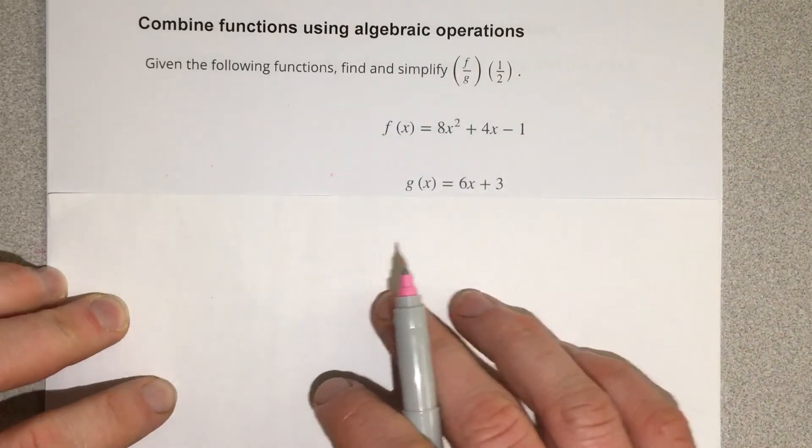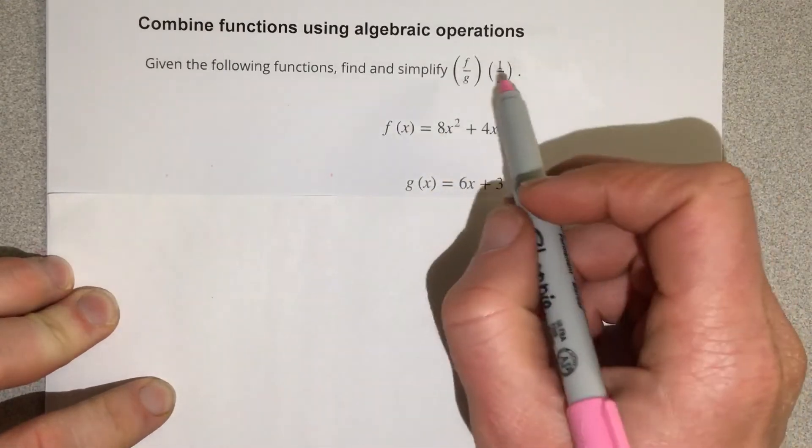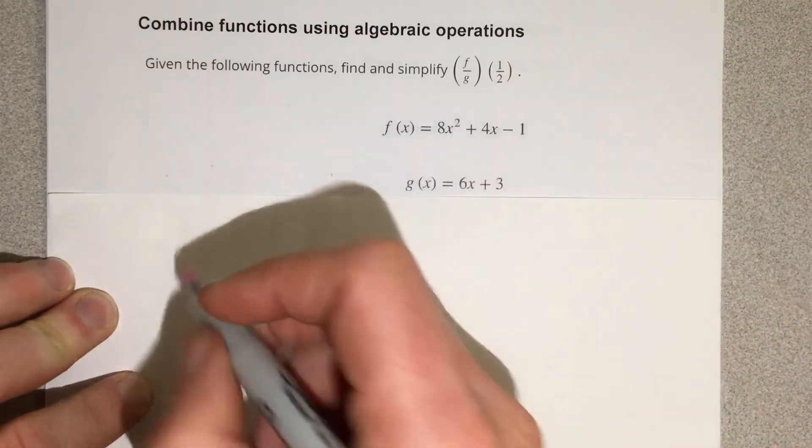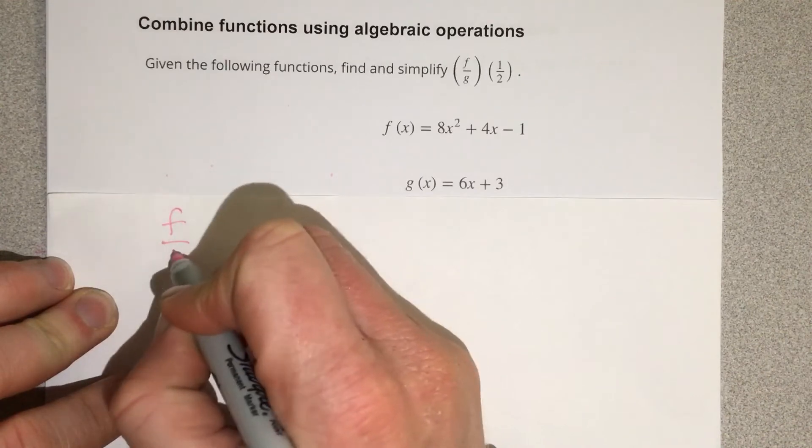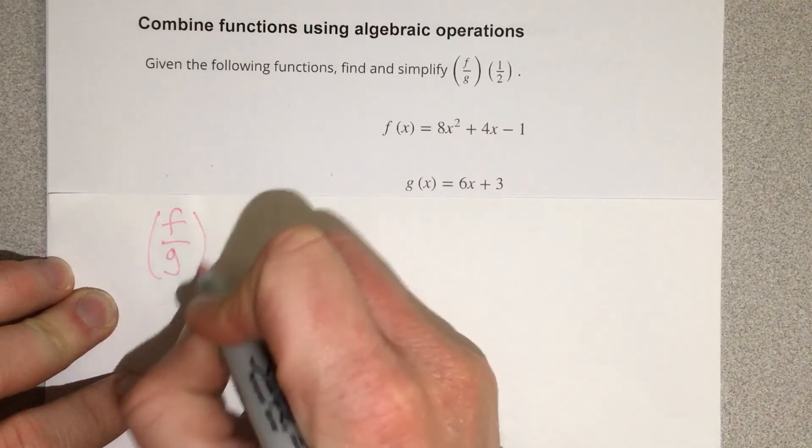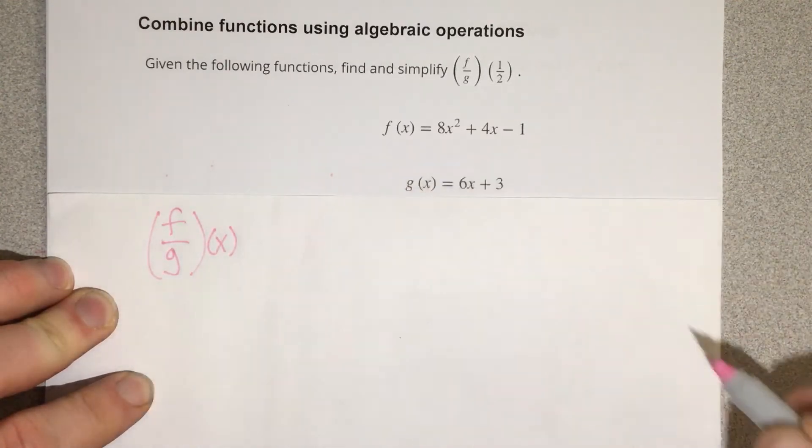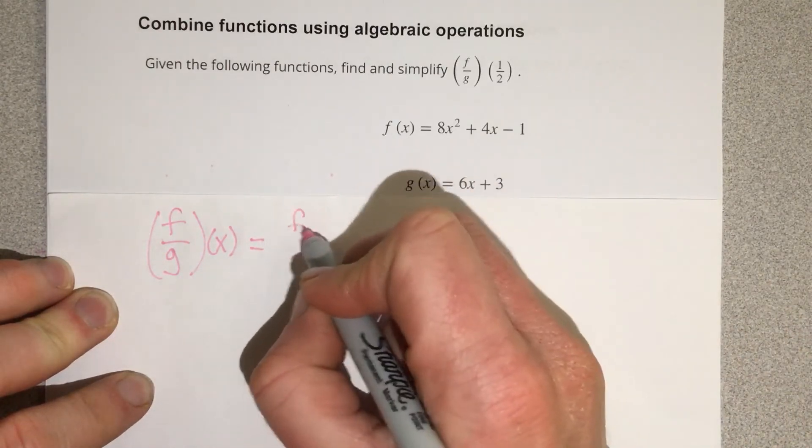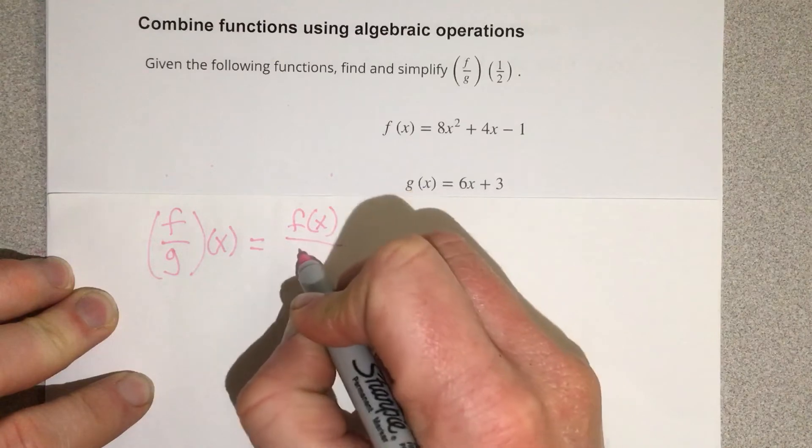Before we do this, though, I like to do the general version, which would be without this one-half input for x. So I'm going to write this as f divided by g of x, the general version, without any number plugged in.